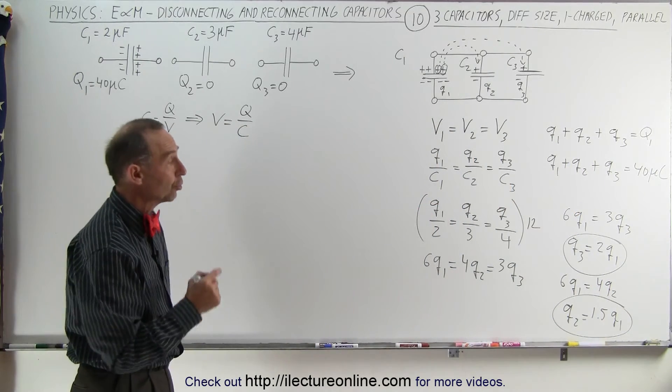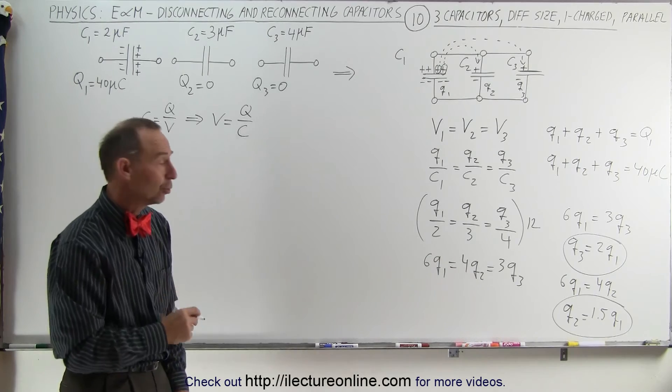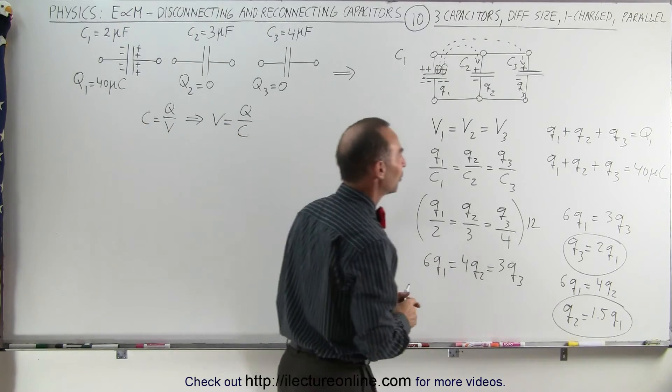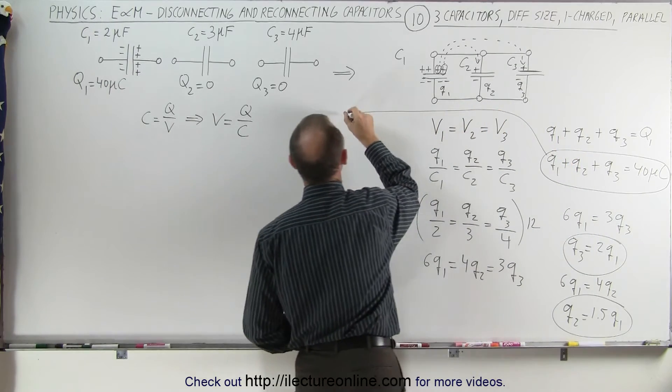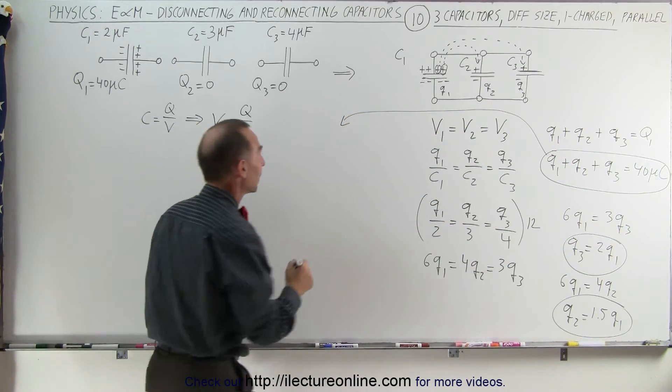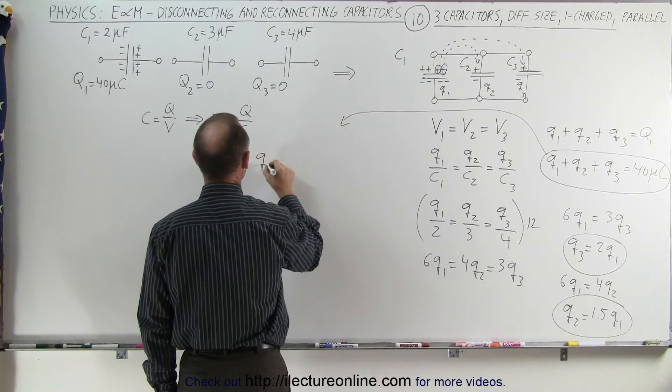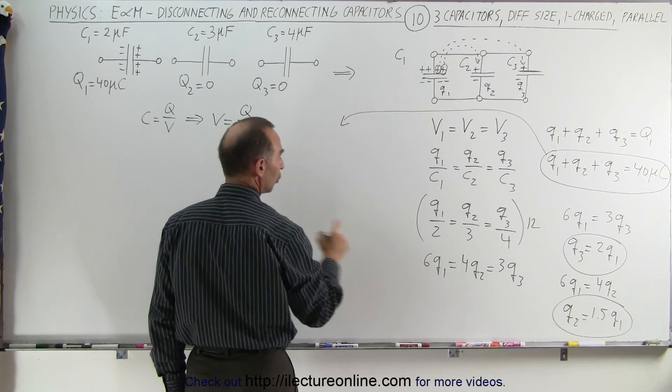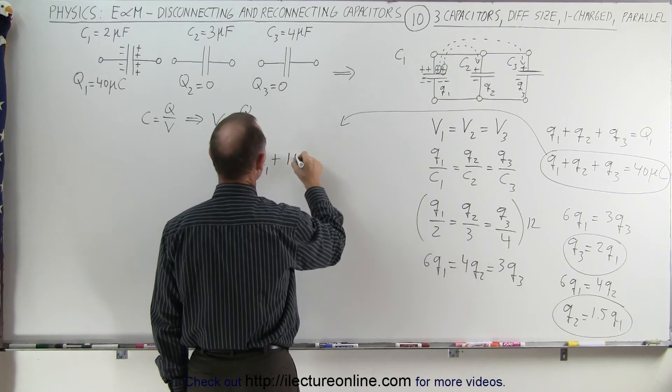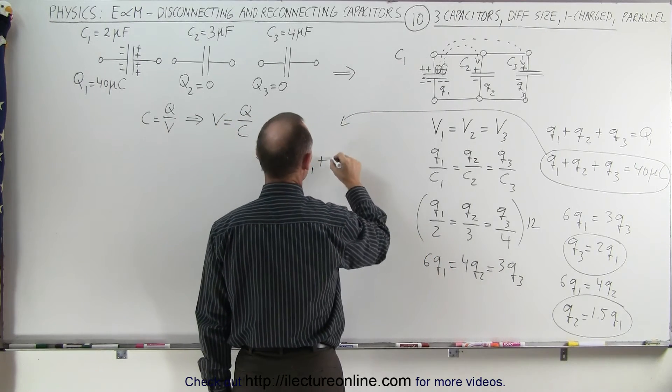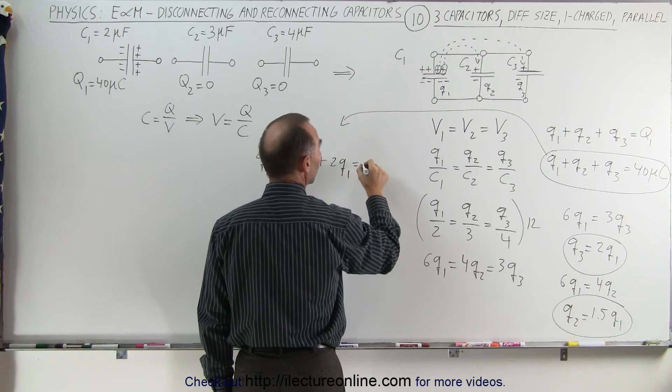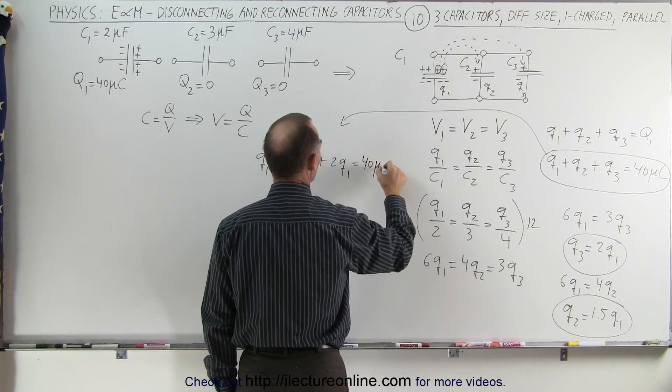Now that I have relationships between q1 and q3 and q1 and q2, I want to go to this equation right here and plug in the new values for q2 and q3. So this gives me q1 plus q2 which is 1.5q1 plus q3 which is 2q1 and that equals 40 microcoulombs.